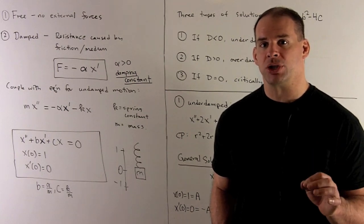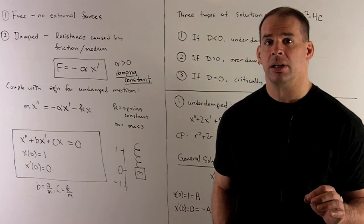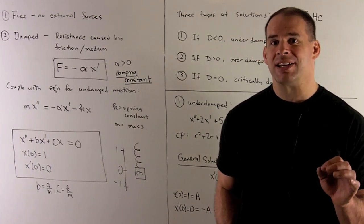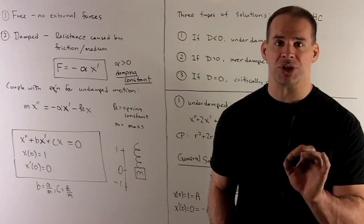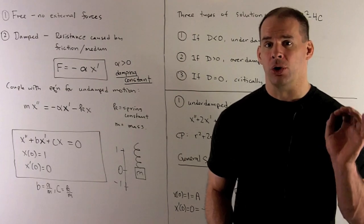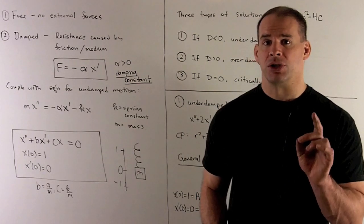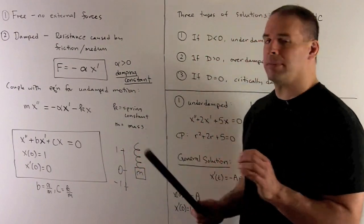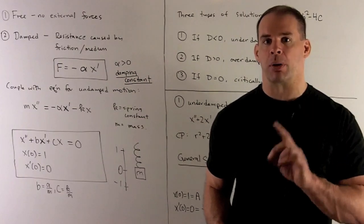Now that we have free undamped motion of a mass spring system under our belt, let's introduce damping. So the idea here, we have a new force, a damping force. It's going to arise due to friction or air resistance, water resistance, whatever medium you're working with. In this case, our new force is going to be proportional to our velocity. So we're going to have a constant alpha, that's going to be called the damping constant. Alpha is positive, and our force is equal to minus alpha times x prime.